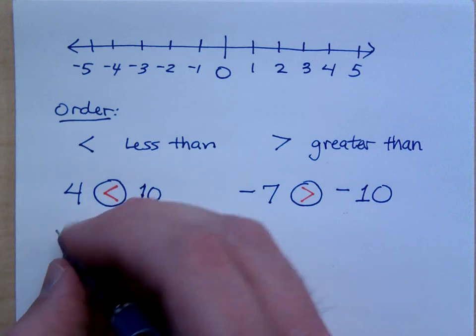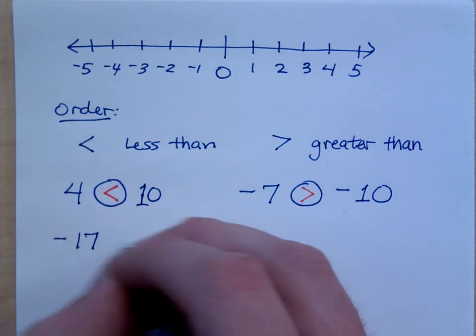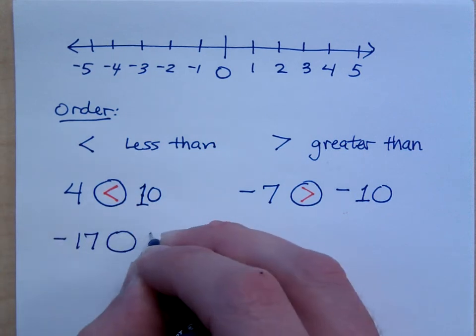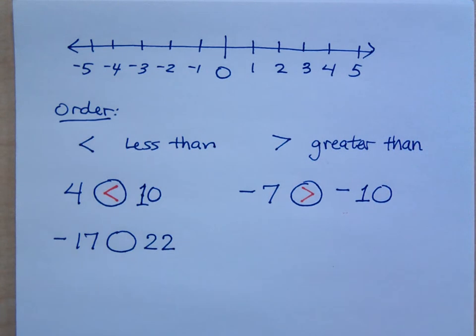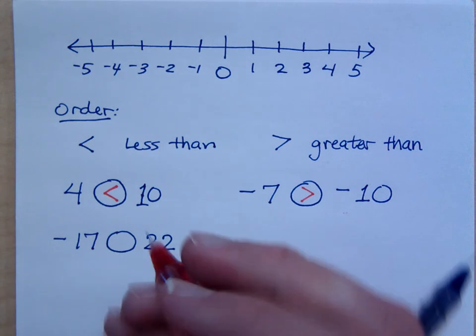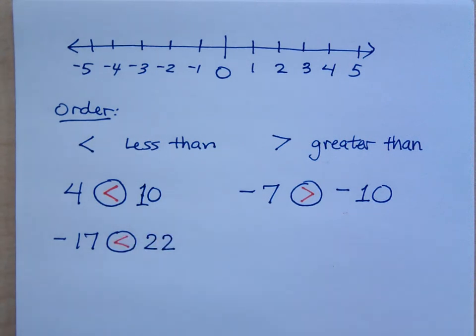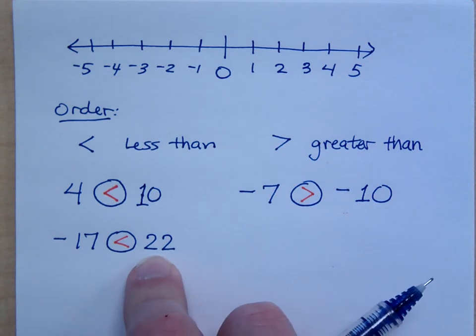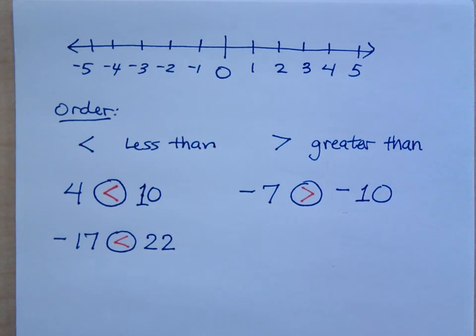If I were to have negative 17 and 22, it should be less than, right? You want to be going towards the greater number, eating the greater number, so you'd be going towards the 22. Do you all agree? So please make sure you understand the order, because this is going to come back to us. It's going to be very important to us.